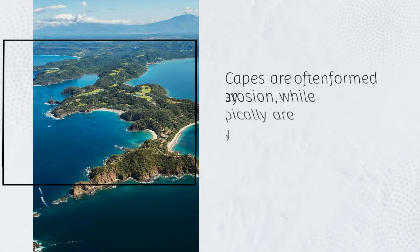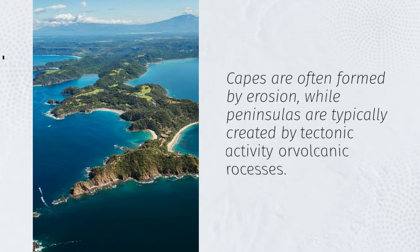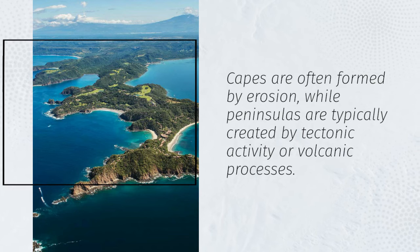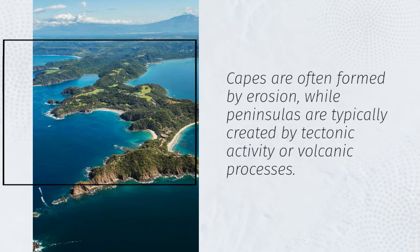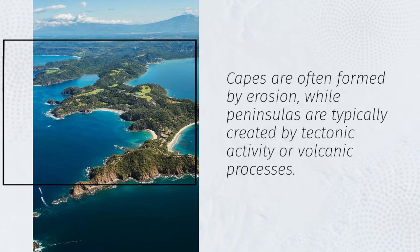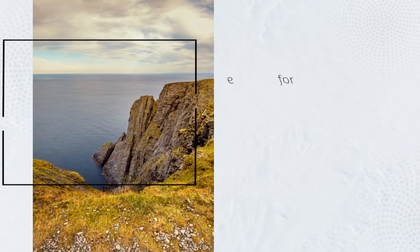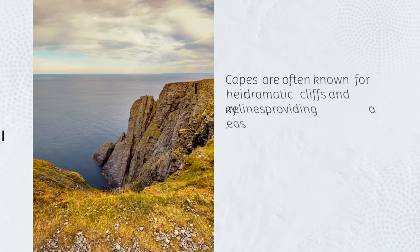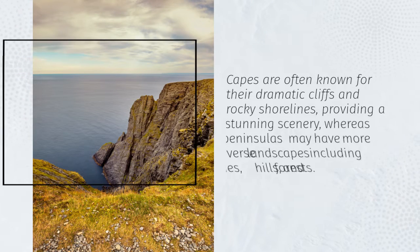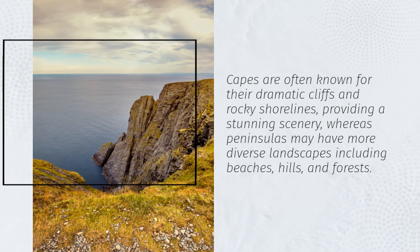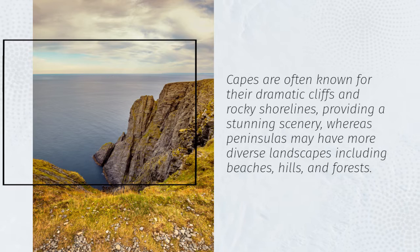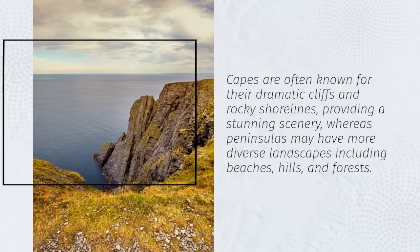Capes are often formed by erosion, while peninsulas are typically created by tectonic activity or volcanic processes. Capes are often known for their dramatic cliffs and rocky shorelines, providing stunning scenery, whereas peninsulas may have more diverse landscapes including beaches, hills, and forests.